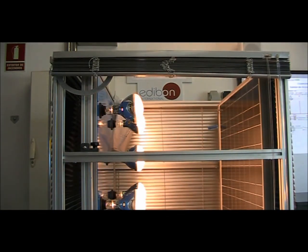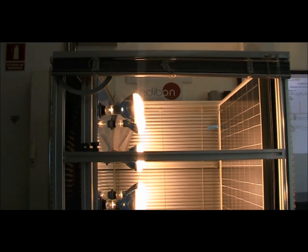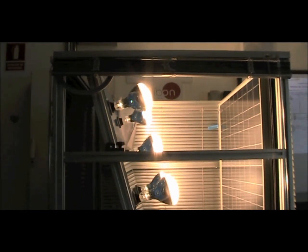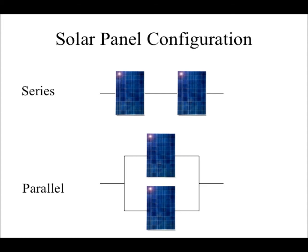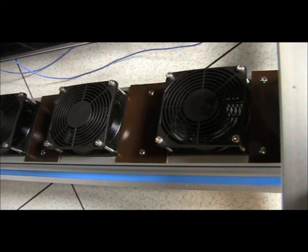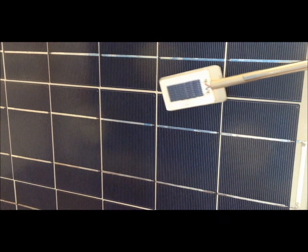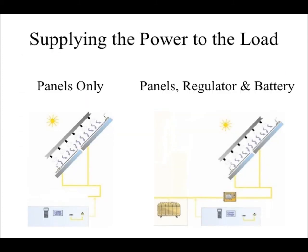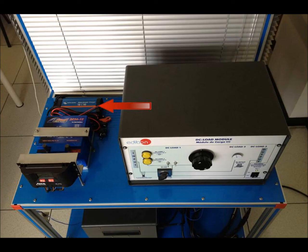The elements that can be adjusted in this unit are: the magnitude of solar radiation emitted from the solar lamps, the light's angle of incidence on the solar panel, series or parallel configuration of the panels, panel ventilation using a row of fans, the location of the solar radiation sensor, the load connected to the photovoltaic panel, and whether the load is being powered only by the panels or if the panels are being assisted by a regulator and battery. The battery charger, 12-volt battery, charge regulator, and load module box are all securely attached to a steel panel.